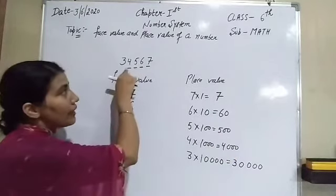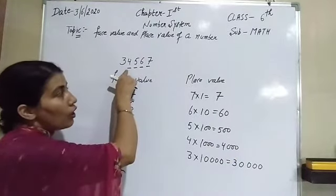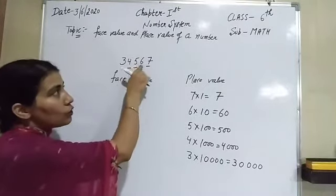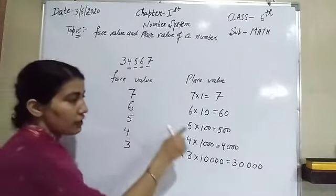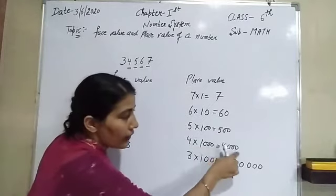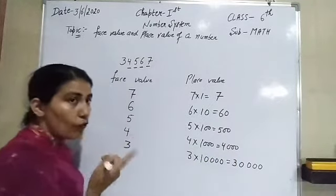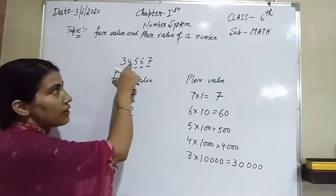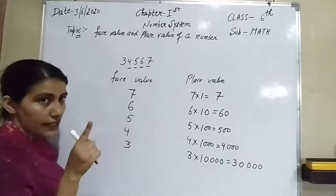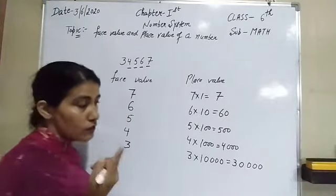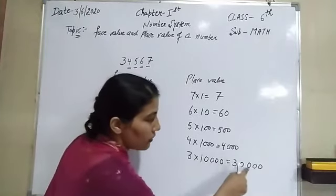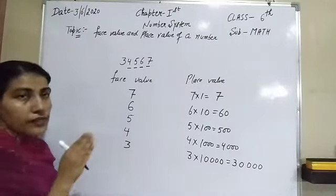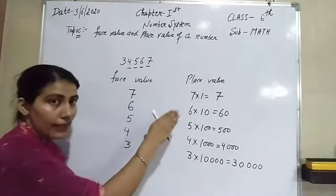For 4, count the digits after it: one, two, three — write three zeros after 4, giving 4000. For 3, there are four digits after it, so write four zeros after 3, giving 30,000. That is the shortcut way to find the face value and place value.